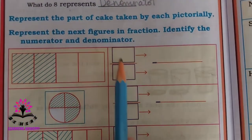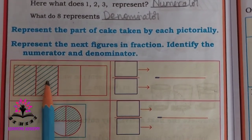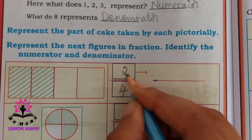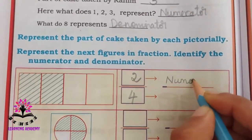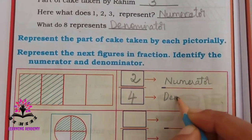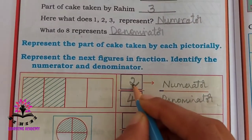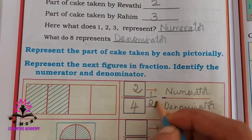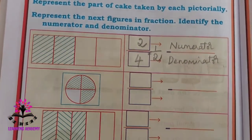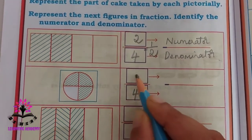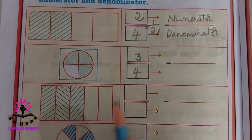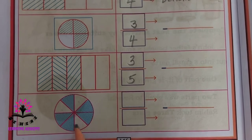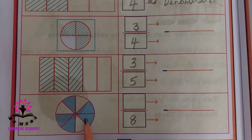Now see the picture and write the fraction. There are four parts and two are colored, so two is the numerator and four is the denominator — two by four, which can also be written as one by two. Next, there are four parts and three are colored — three by four. Then there are five parts and three are colored. The next circle has eight parts and five are colored.